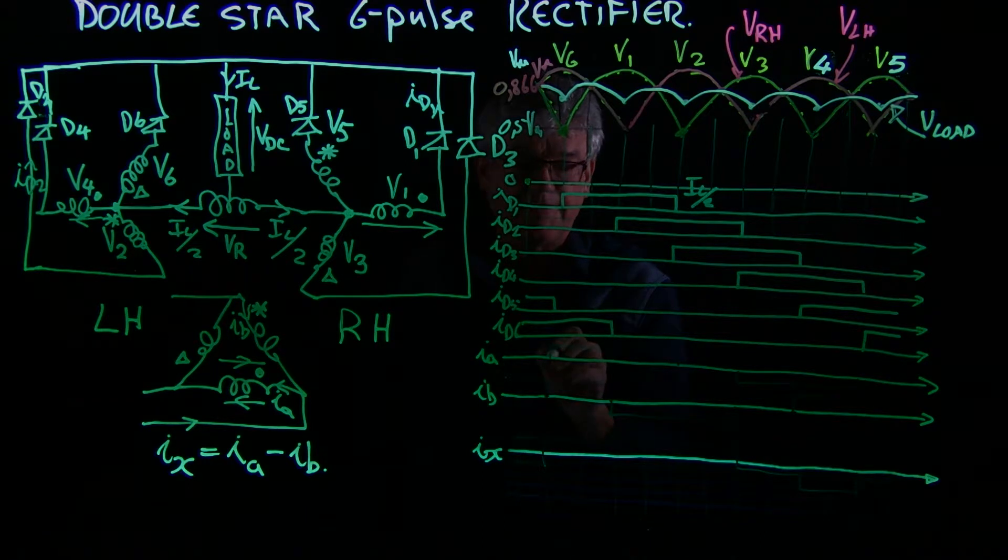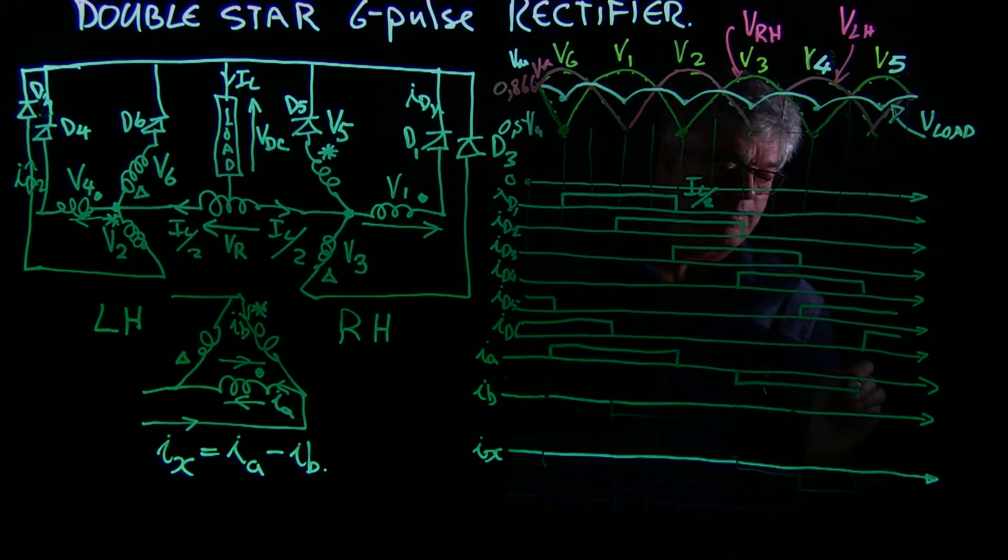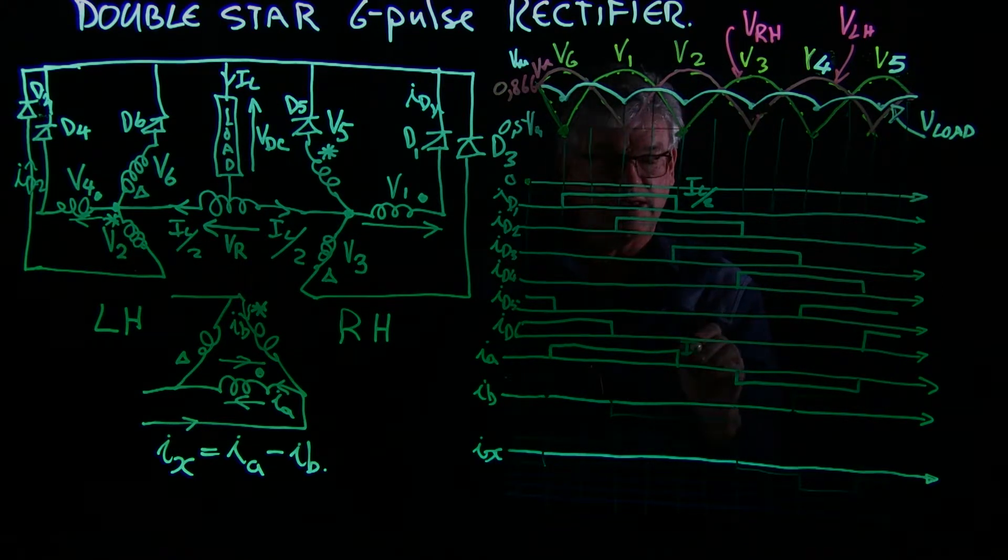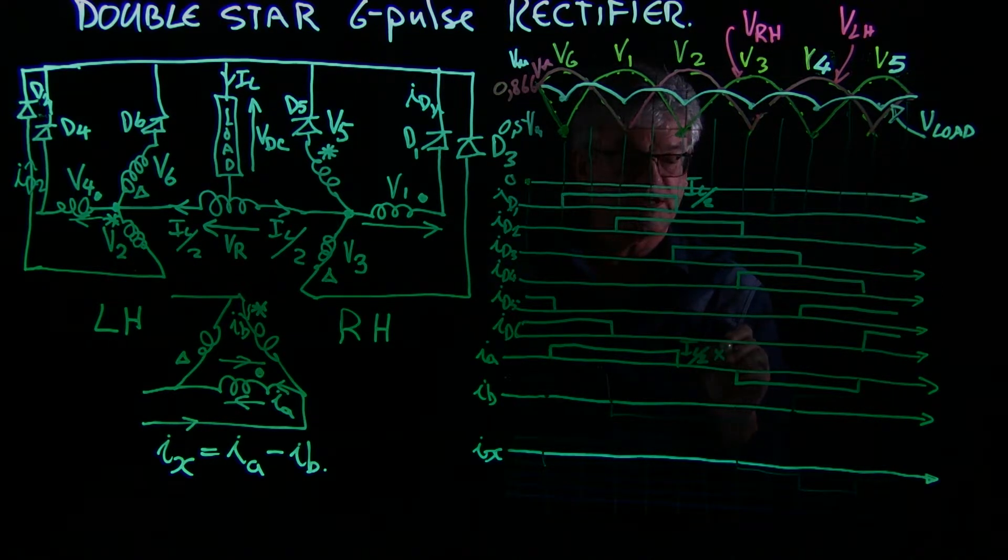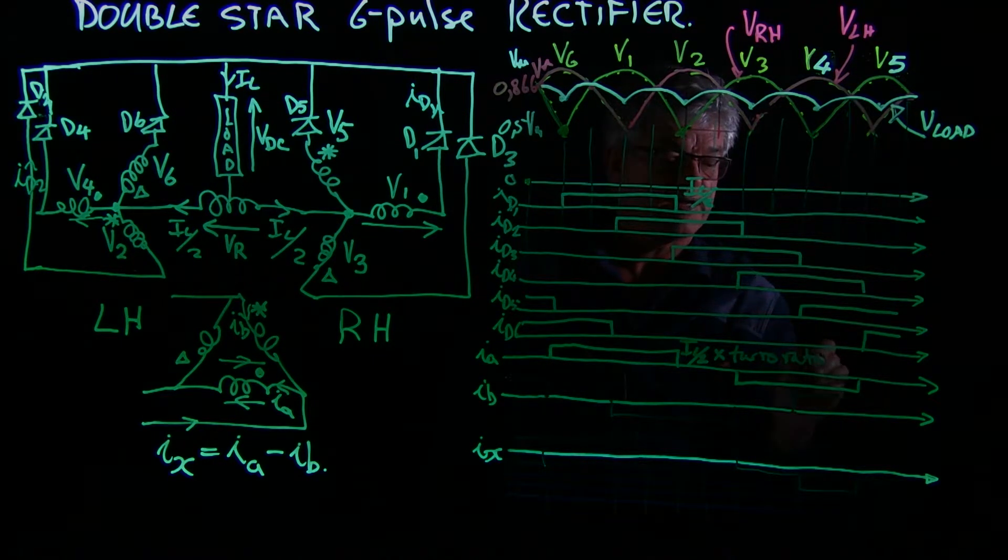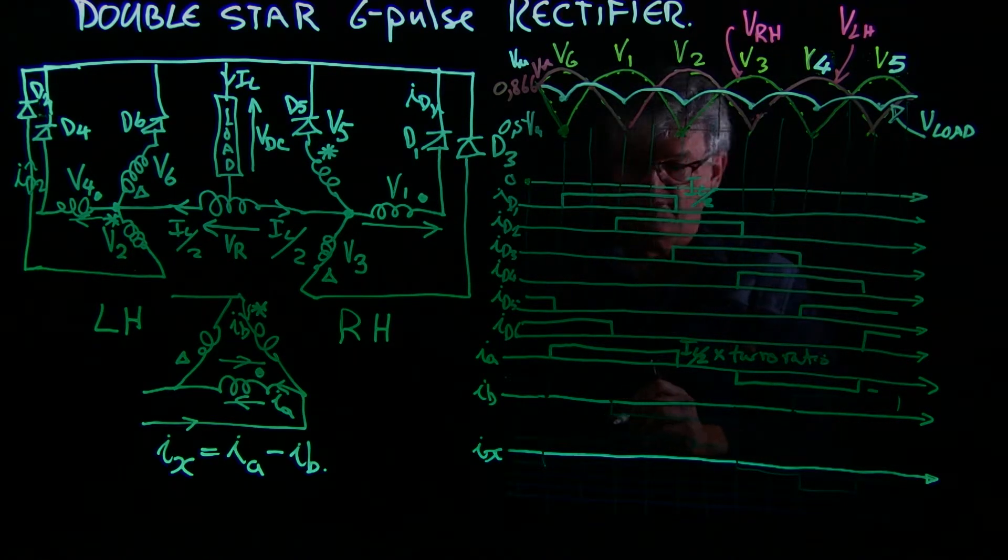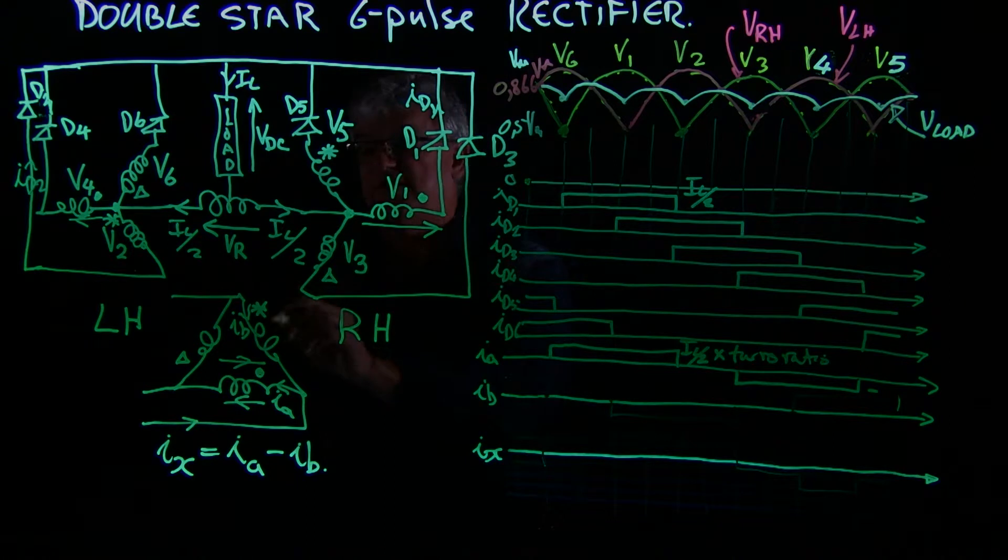So Ia will be this wave shape here, where this will be IL over 2 times the turns ratio. And on this side, it will just be negative of that same value. IB is the asterisk,